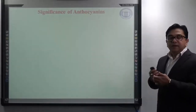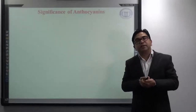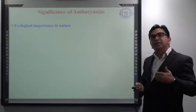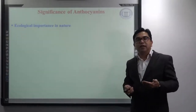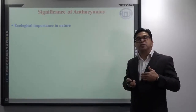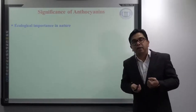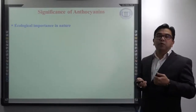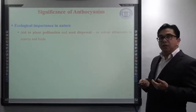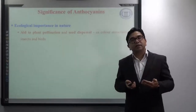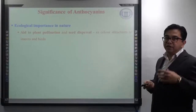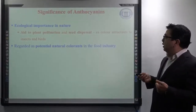Now we will discuss the various significance of anthocyanins. As we have already discussed under flavonoids, anthocyanins are also a class of flavonoids. One of the major ecological importances they show in nature is by helping in plant pollination — an important step in the process of reproduction and dispersal of seeds. By providing color, they act as a color attractant, attracting various birds and insects and helping pollination and dispersal of seeds.